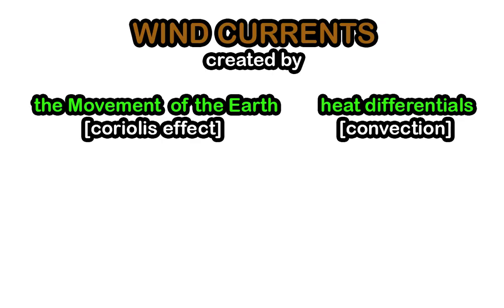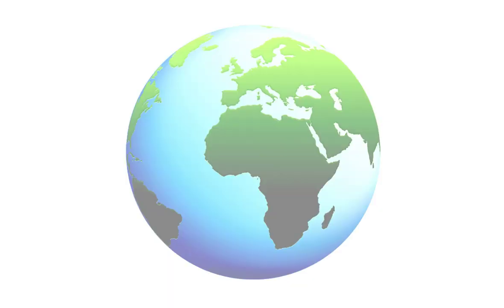Currents are going to be created by two things. Either the movement of the earth itself, the fact that the earth spins, and we have something called the Coriolis effect. As well, the fact that the sun is not heating up the earth exactly the same amount all across its entire surface. Not just the fact that one side is in shadow, but even the fact that certain parts of the earth are getting heated more than others, even on the side that is facing the sun. Let's not waste time. Let's pop right into the idea of the Coriolis effect.